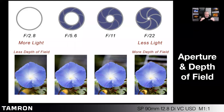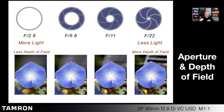You do have to pay attention to what's going on in your foreground and your background. For instance, in this example with this beautiful blue flower, we wanted the flower to be the main center of attention in the photo. But as we begin to stop down, by the time we get to even f5.6, and especially f8, f11, and f22, the lawn furniture in the background becomes an annoyance. So in this case, we want to use a large aperture just to isolate our subject.